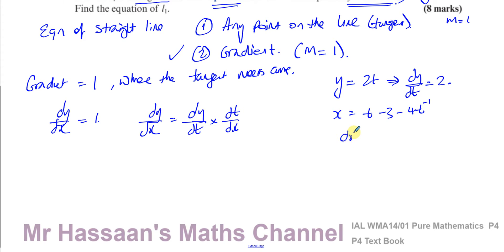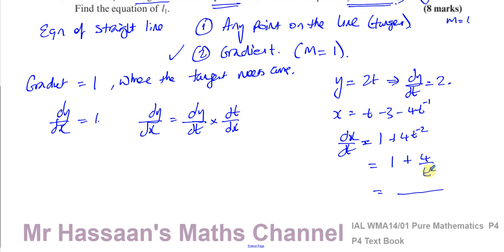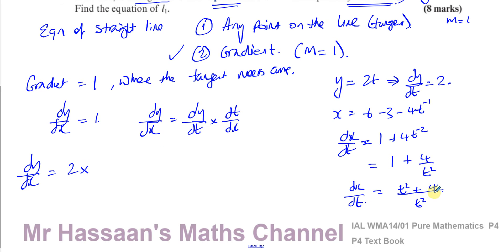Differentiating x with respect to t: dx/dt equals 1 plus 4t to the power of minus 2, which simplifies to 1 plus 4 over t squared. Writing as a single fraction with denominator t squared gives dx/dt equals t squared plus 4 over t squared. Therefore dy/dx equals dy/dt times dt/dx, which is 2 times t squared over t squared plus 4, giving dy/dx equals 2t squared over t squared plus 4.